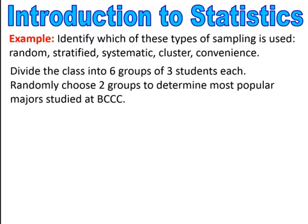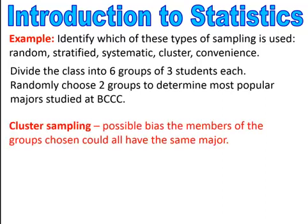This next one: you divide the class into six groups of three students each, then randomly select two groups to determine the most popular major studied at BCC. This is cluster sampling — you divide into groups or sections and take the full group to study. A possible bias is that the members of the groups chosen could all have the same major, since students in the same major tend to sit together in class.